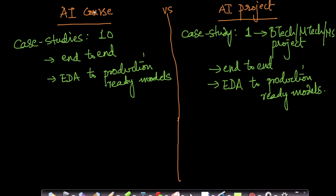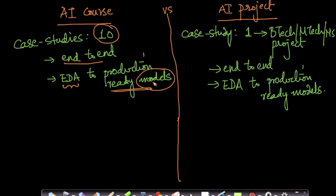In the AI course we solve 10 case studies preparing you for industry jobs. All 10 case studies are solved end-to-end, from exploratory data analysis up to multiple production-ready models. We never solve a problem using a single model — we use multiple models, with the more advanced ones being production-ready. Understanding these 10 case studies makes you well prepared for industry jobs.